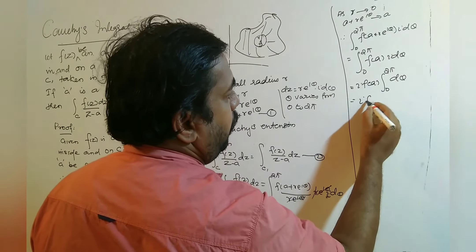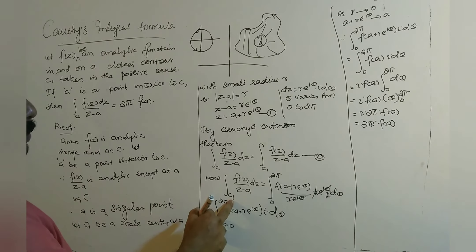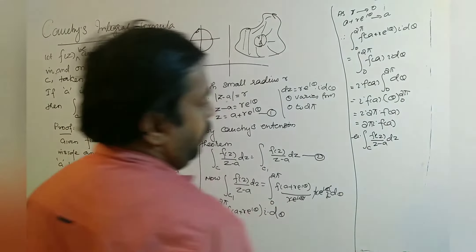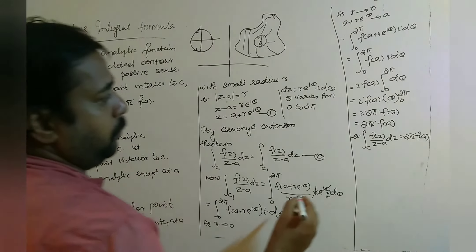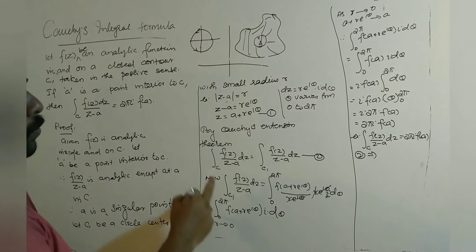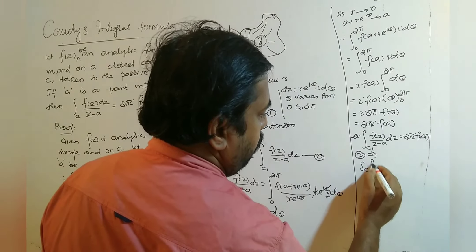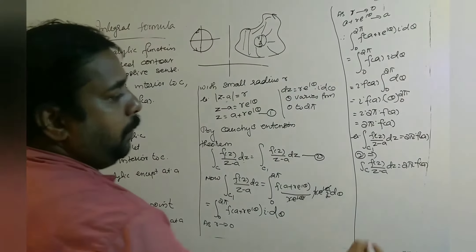So the integral over C1 of f(z)dz/(z−a) equals 2πi·f(a). But equation 2 implies that the integral over C of f(z)dz/(z−a) equals the integral over C1 of f(z)dz/(z−a), which equals 2πi·f(a). This is our required answer.